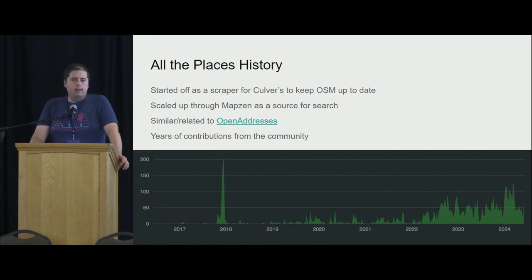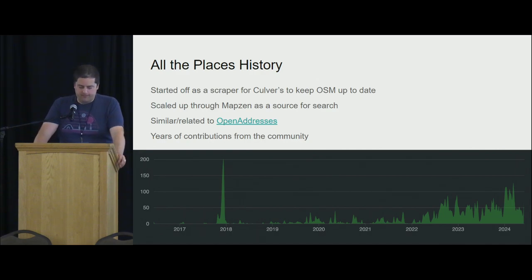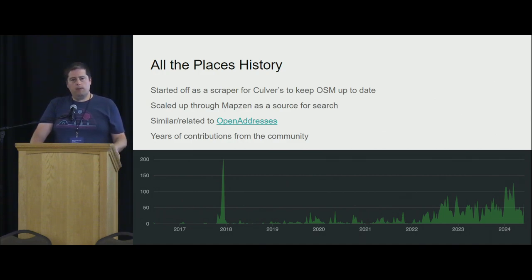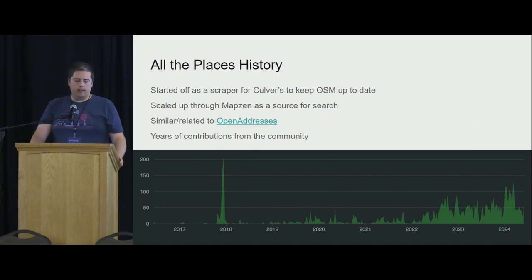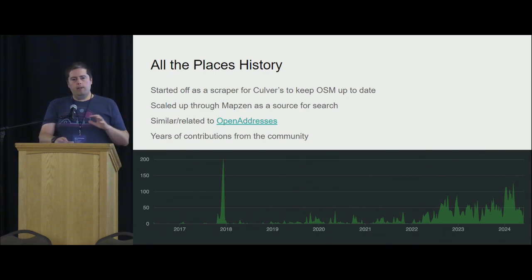All the Places started off as a single little Python script that would go and grab Culver's restaurant locations. Culver's — best fast food burgers, hands down, I'll fight you on that. I wanted to make sure all those Culver's locations ended up in OpenStreetMap. I chose Culver's because I was sitting in a Culver's parking lot while thinking about this, but also because Culver's releases their locations as a CSV. Some other restaurants do that too because RV people will import that into their Garmin GPS. So that was back in 2016 or 2017, and I ended up with a little script that matched OpenStreetMap Culver's with the scraped Culver's, and I ran that periodically.